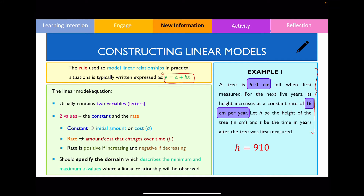So I write h = 910. The gradient is 16, and it always has the variable next to it, so I write 16t. Because the tree is growing over time, I write a plus sign: h = 910 + 16t. The last thing is to specify the domain. The question says this tree only grows at a constant rate for the next five years, so I write the domain as 0 ≤ t ≤ 5, meaning the linear relationship only occurs from zero to five years.